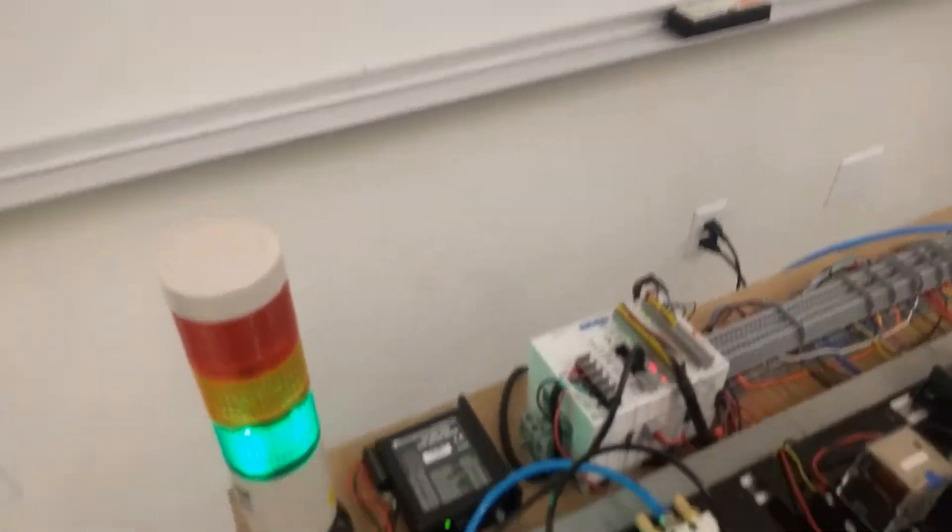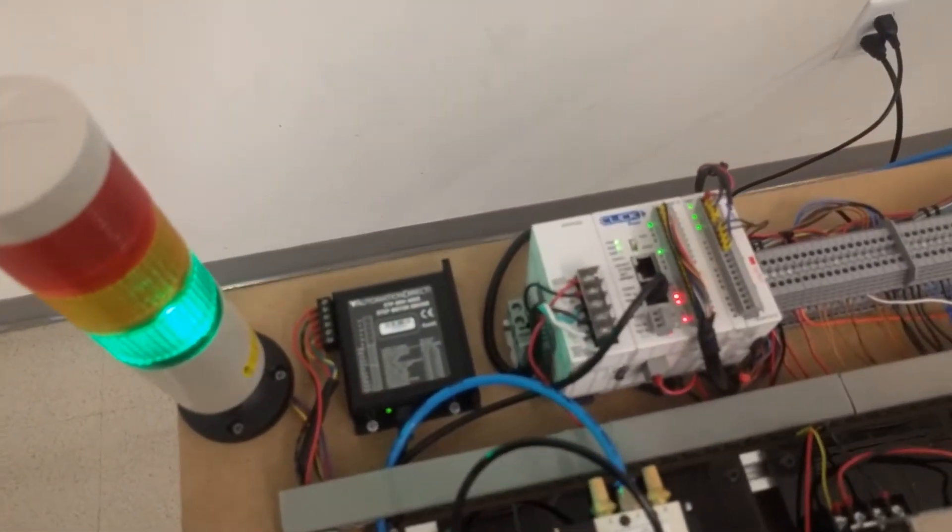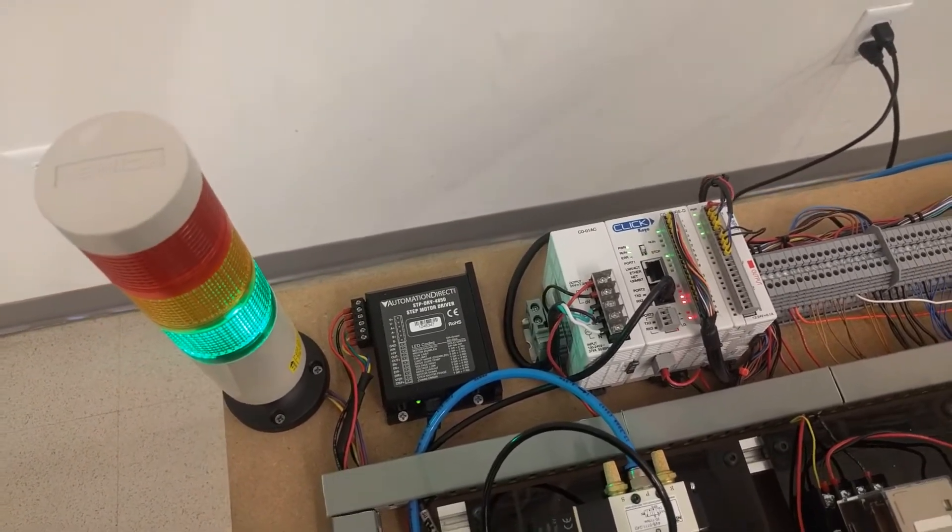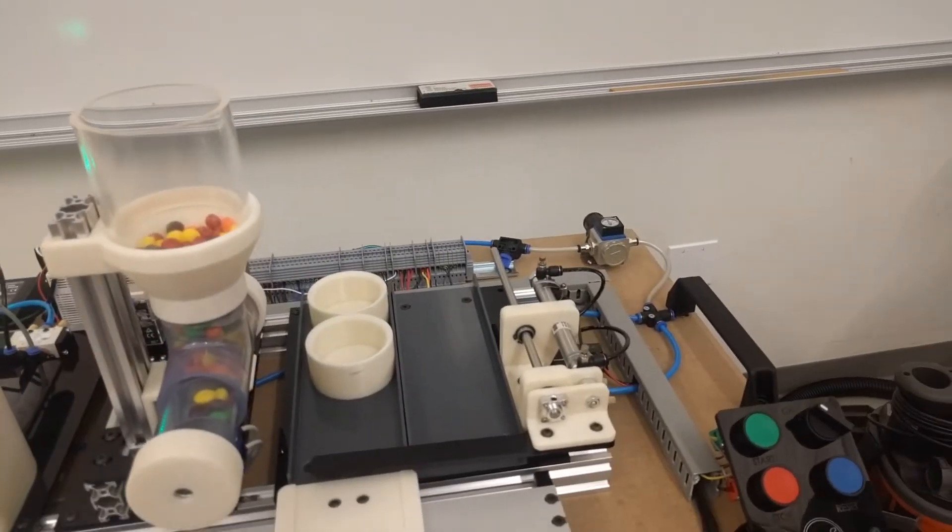So we're using our control system, a CLICK PLC. A CLICK PLC is about $150. It looks complicated.